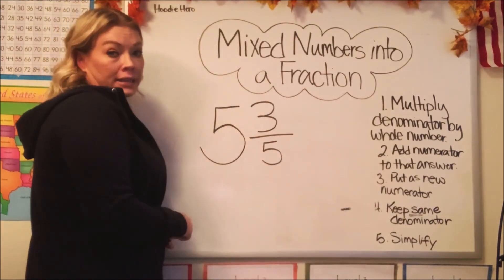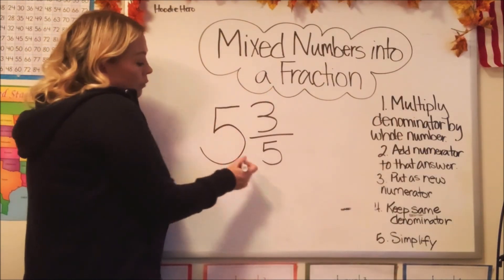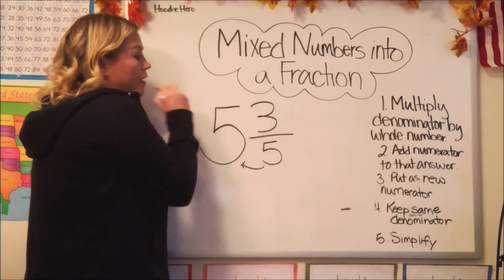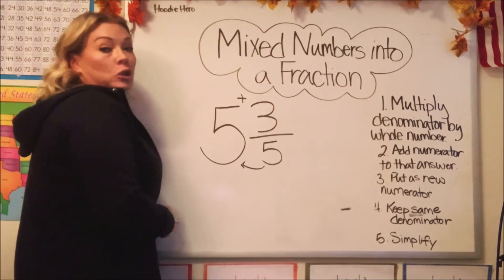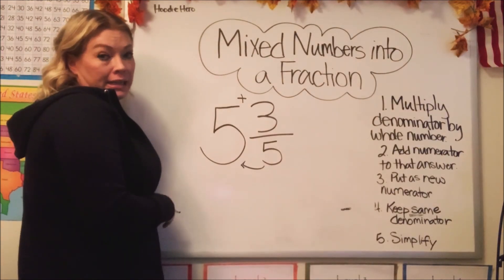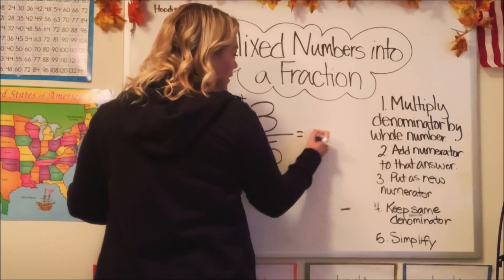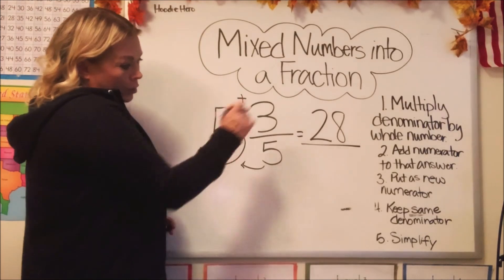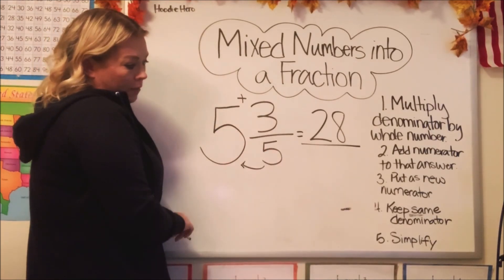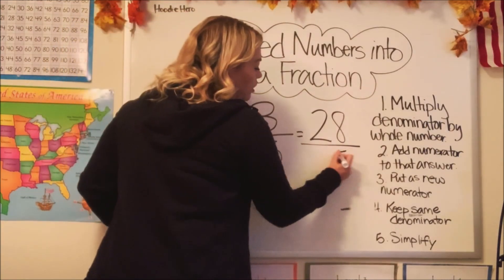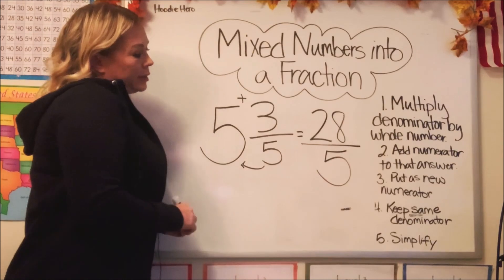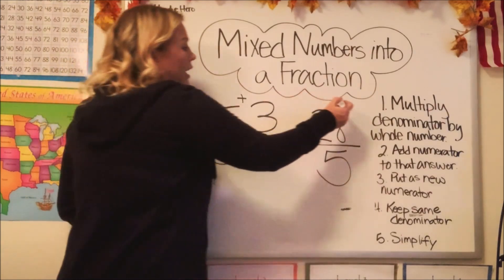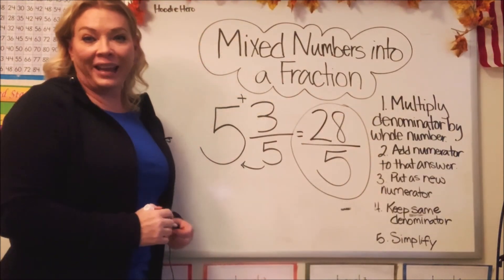So here we have five and three-fifths. Step number one, we're going to multiply the denominator by the whole number — five times five is 25. And we're going to add the three: 25 plus three is 28. Now we put that as our new numerator. Going to step four, we keep the same denominator, which is five. We can't simplify it, so our answer here is 28 fifths.